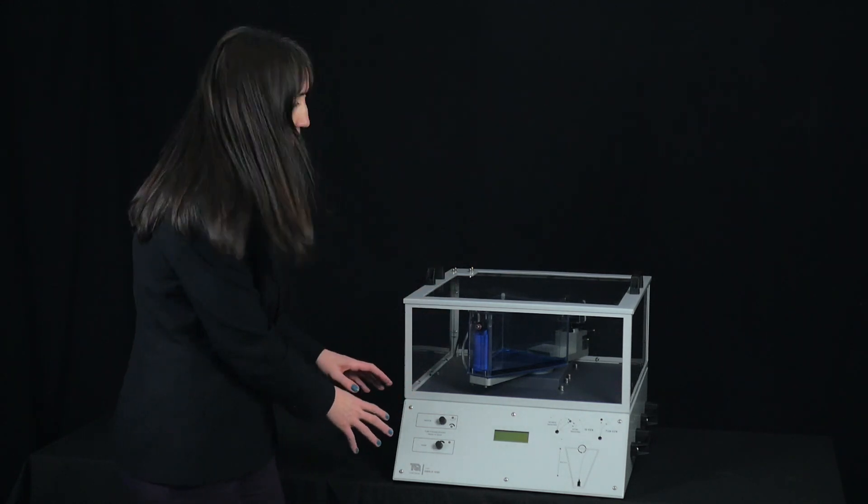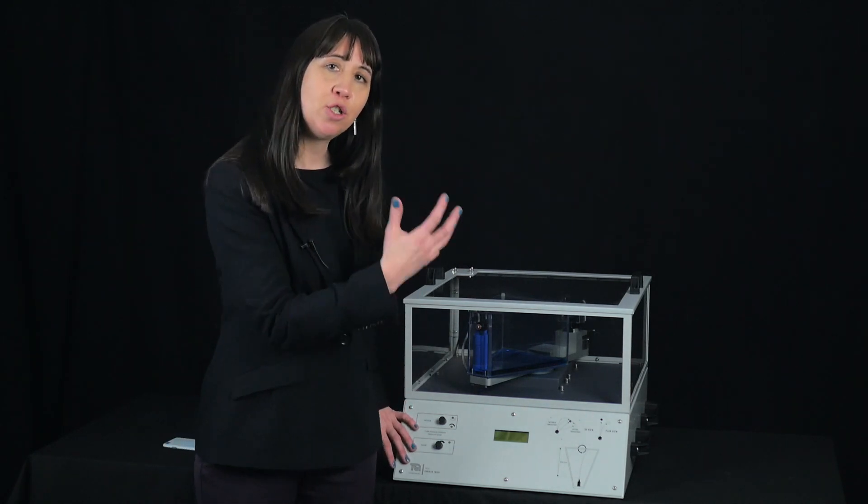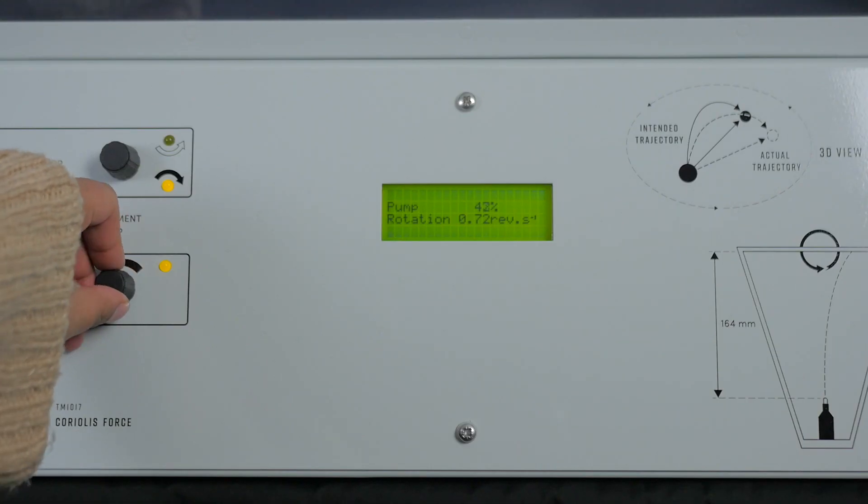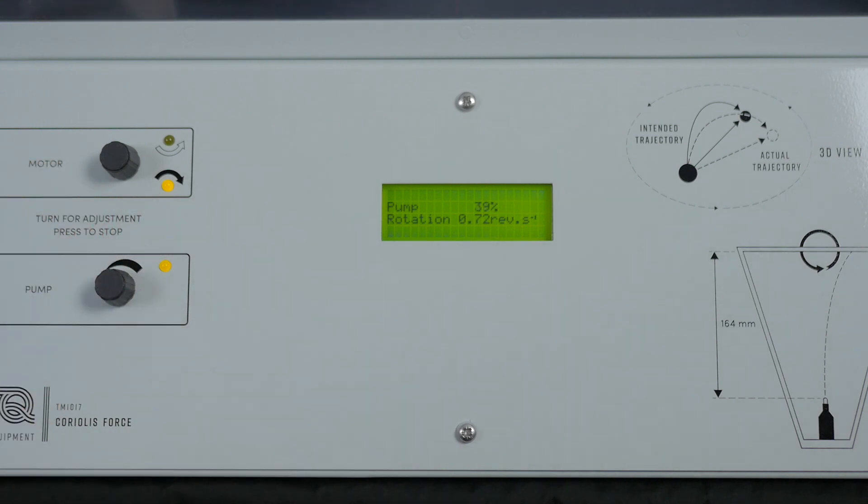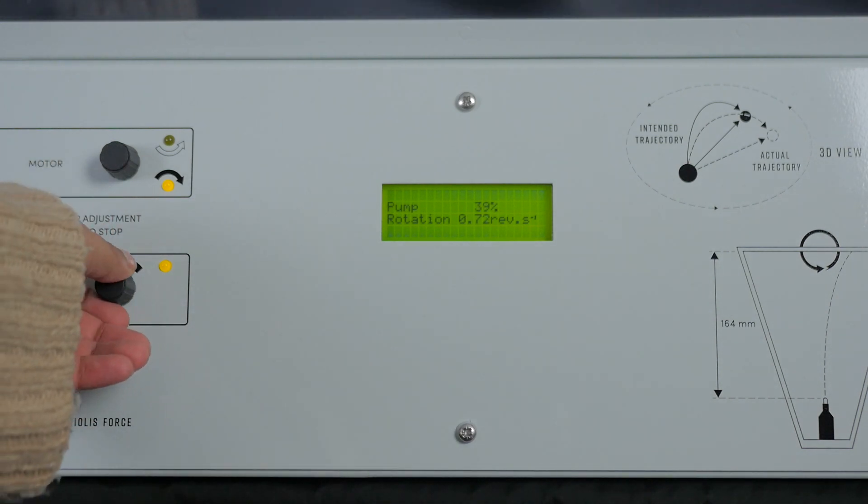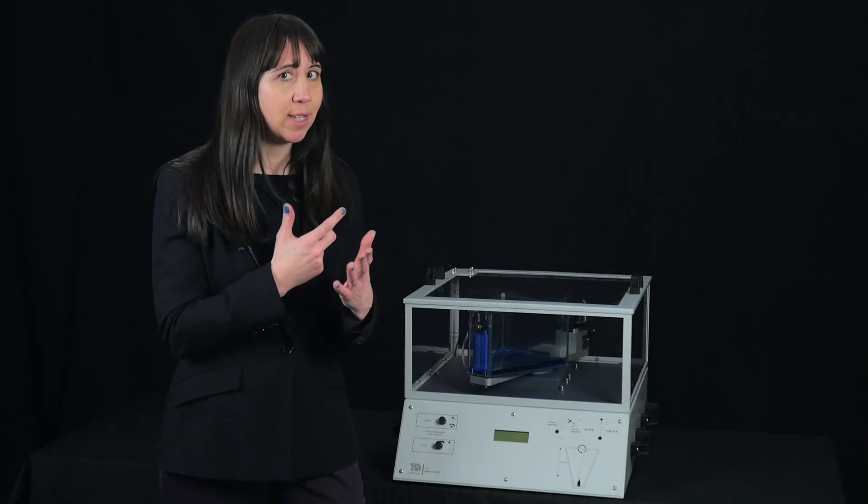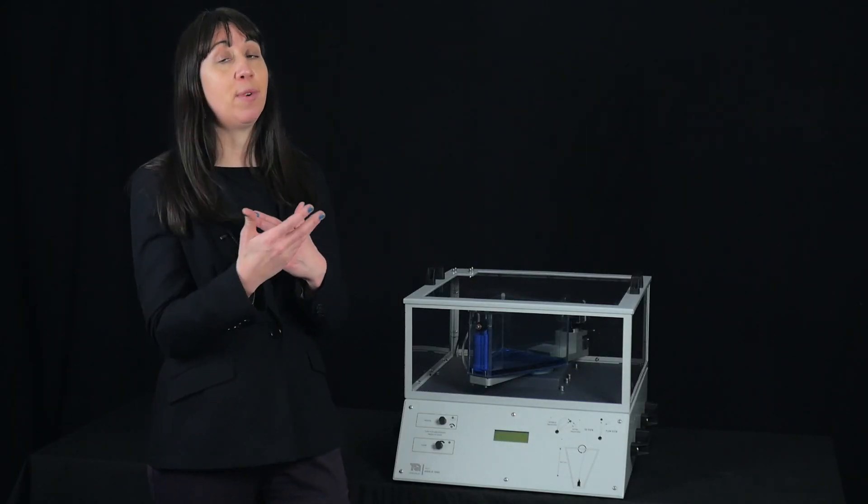Let's look at the lower section now which contains the control and display on the front of the panel. These controls are for the rotating arm motor and the water pump. Students can adjust the speed and direction of the rotation. They can also change the flow rate of the pump.